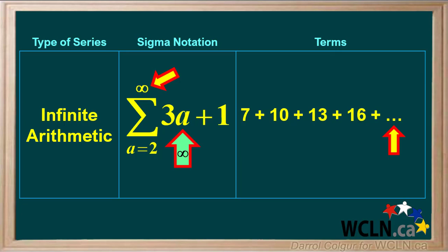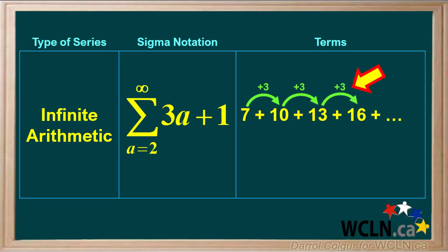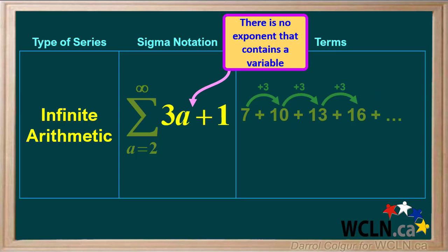So we'll just write dot dot dot here. Looking at the terms, we see this is an arithmetic series and the value for d is positive 3. Again, there is no exponent containing a variable in the function, which also confirms that this is an arithmetic series.